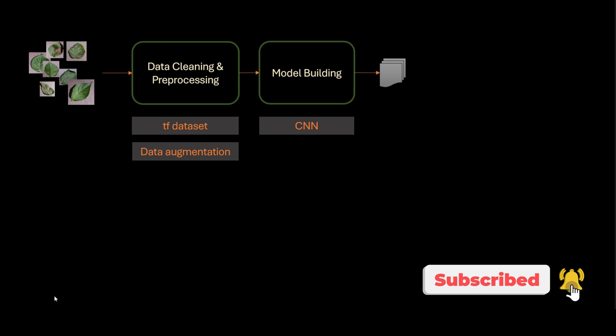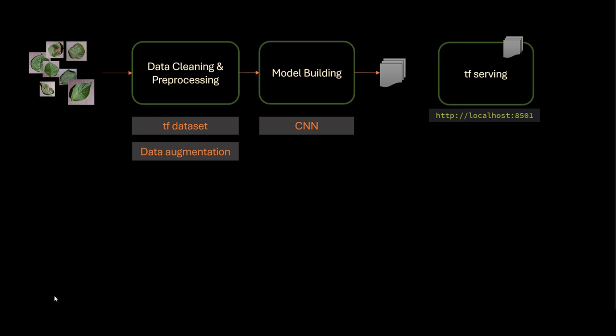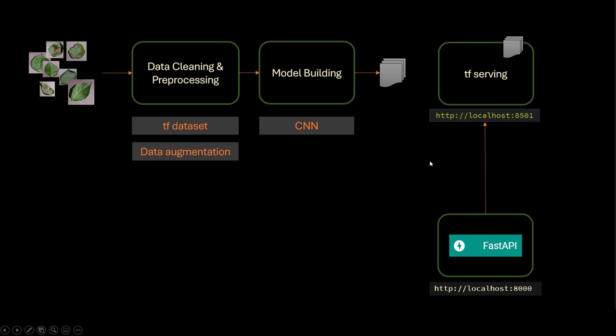Then we'll cover some of the ML ops concepts using TF Serving, where we'll have a TF Serving server running on top of these exported models which can serve different versions of these models. TF Serving will be called from FastAPI. Now you will be asking why we need FastAPI and TF Serving both—well don't worry, we will be going over all those things.